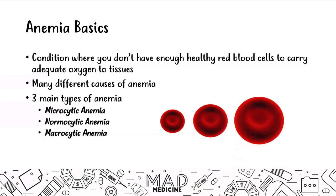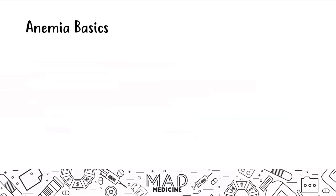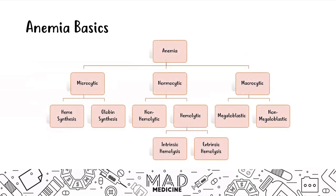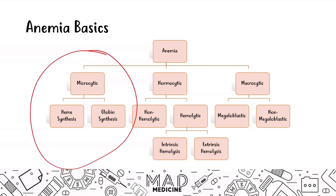All of these are based off of the size of the red blood cells, as you can see in this photo. We already talked about this breakdown — this little workflow for anemias — and in the upcoming videos we're going to be talking about this section right here: the microcytic anemias.